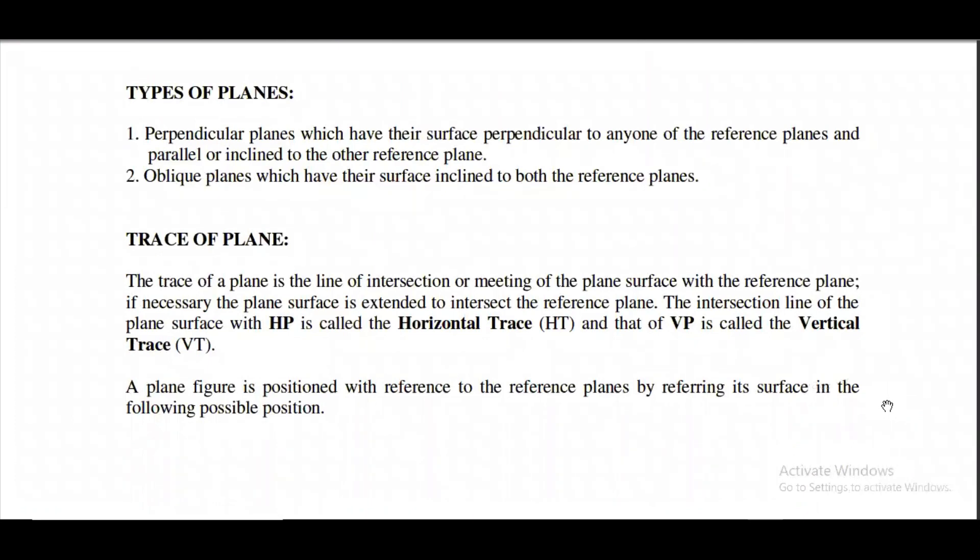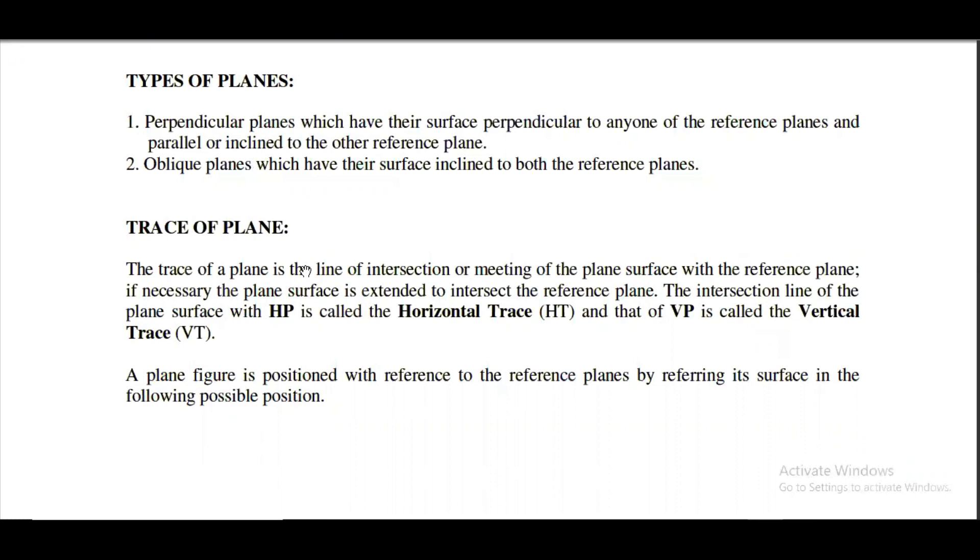Coming to the trace, the line of interaction and meeting of the plane surface with the reference plane is known as trace. Simply, the intersection line of the plane with HP is the horizontal trace, and that of VP is called the vertical trace. The plane figure is positioned with reference to the reference planes by referring its surface in the following possible positions.